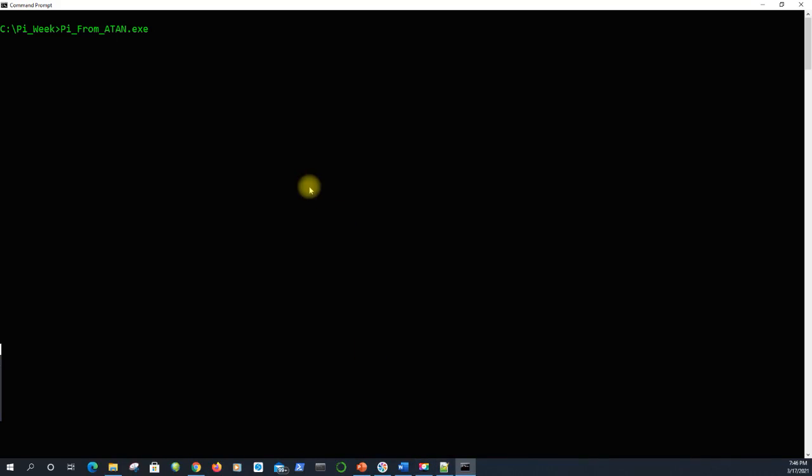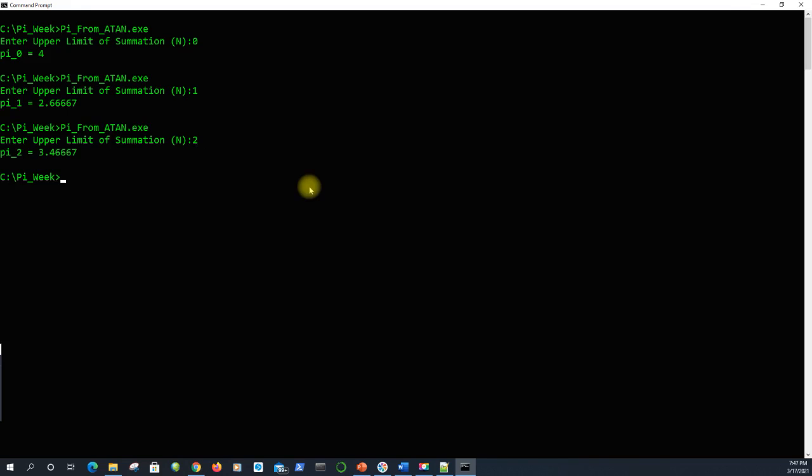So now I'm going to run the program. And we'll start by reproducing the calculations that I showed you in the slides. Start with n equals 0, we get 4 just like before. n equals 1, n equals 2, and 3. It's a lot faster this way. But we're not approaching pi very quickly here. Let's try a bigger value of n, like 100.